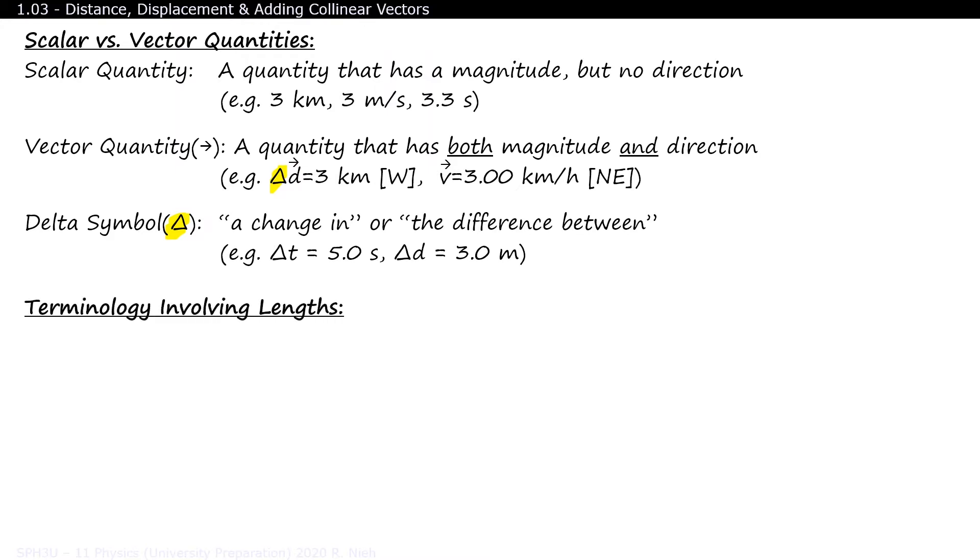There are three very different words used to describe lengths. You probably know distance already. There's a triangle in the symbol because you need to change locations in order to move a distance. Also distance does not care about direction. You'll have to drive 523 kilometers to get to Montreal, and then you'll have to drive 523 kilometers to get back to the 6. I mean Toronto.